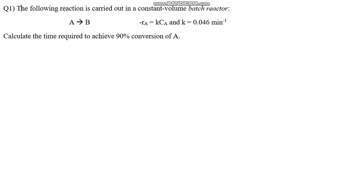Assalamu alaikum brother, I hope you are doing well. So I am starting from the practice questions that we were supposed to solve. In this problem statement, the following reaction is carried out in a constant volume batch reactor. The type of reactor is defined in the question, and each type of reactor has specific equations that you need to use. This is the reaction A goes to B.